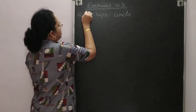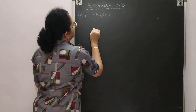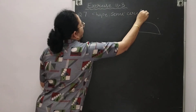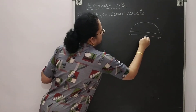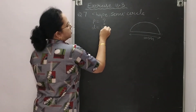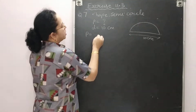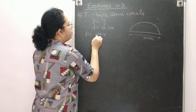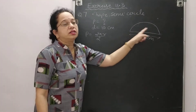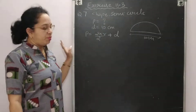Question number 7: Find the perimeter of the adjoining figure, which is a semicircle. The diameter is 10 cm and perimeter is the question mark. Perimeter of a full circle is 2πr, but for a semicircle we take half of that. However, we must also add the diameter, as it forms the straight edge not included in the curved circumference.